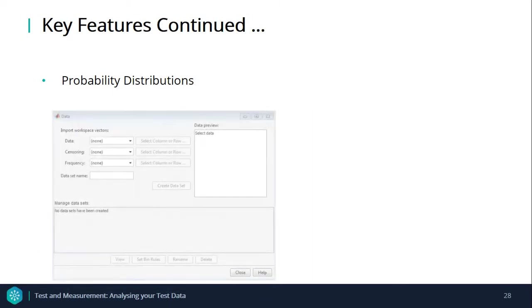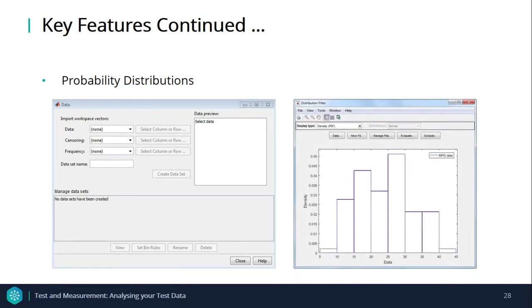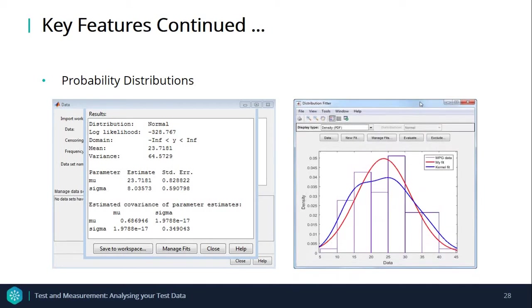With the Distribution Fitting app, you can interactively fit a probability distribution to data using predefined univariable probability distributions, a nonparametric kernel smoothing estimator, or a custom distribution that you define.